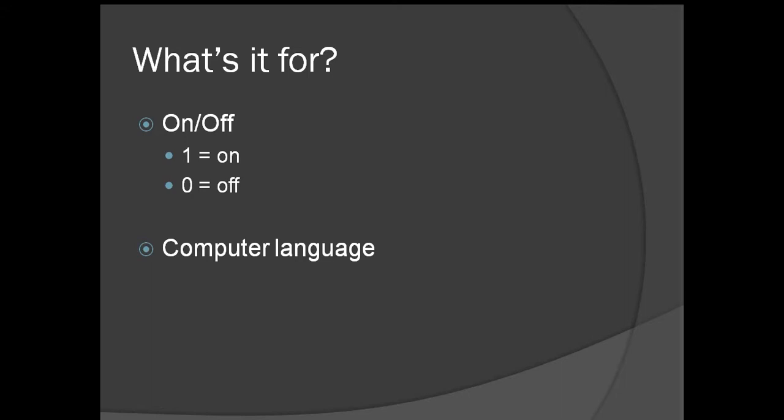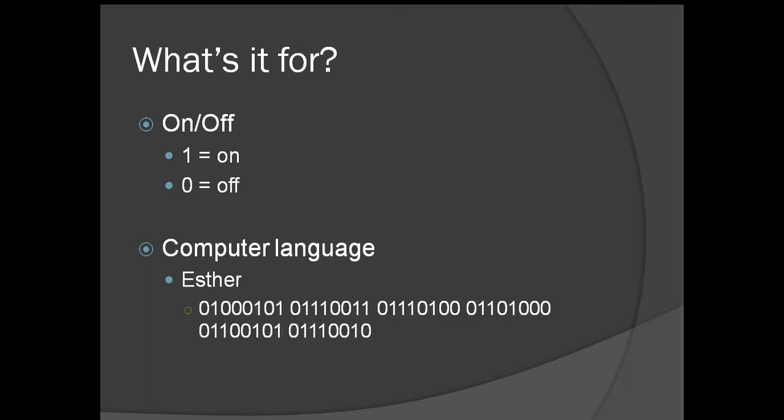So when I type my name like this, the computer understands something like this — it's a bunch of zeros and ones compiled together to form my name. And everything can be combined to form something like that for the machine.